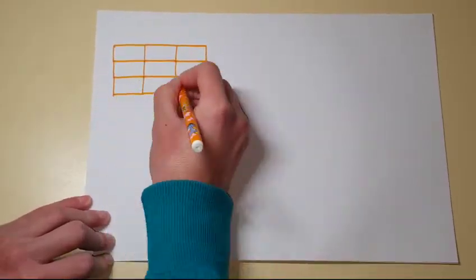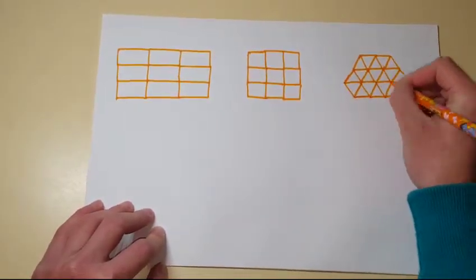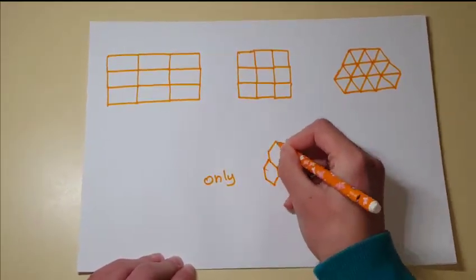Bees after all could build honeycombs from rectangles, or squares, or triangles. But for some reason, bees choose perfect hexagons.